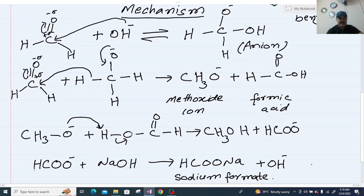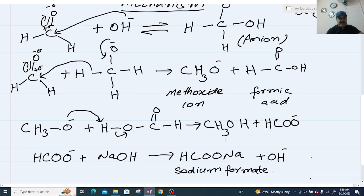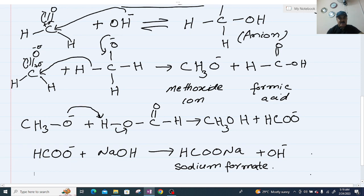Methoxide ion reacts with formic acid to produce methyl alcohol and formate ion. Then formate ion reacts with NaOH to produce sodium formate and OH minus. These reactions are only shown by aldehydes which have no alpha hydrogen.